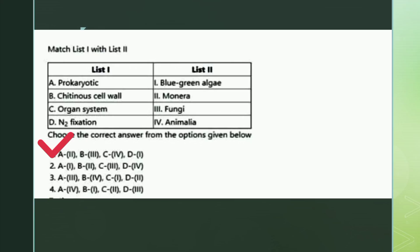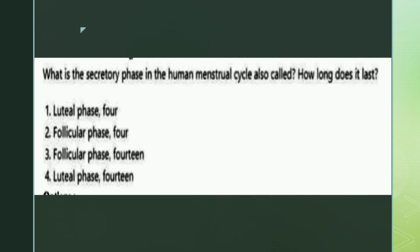The next question: what is the secondary phase in the human menstrual cycle also called, and how long does it last? The options are: luteal phase, follicular phase, follicular phase 14 days, and luteal phase 14 days. The right answer is option four: the secretory phase is also known as the luteal phase and it lasts for 14 days.